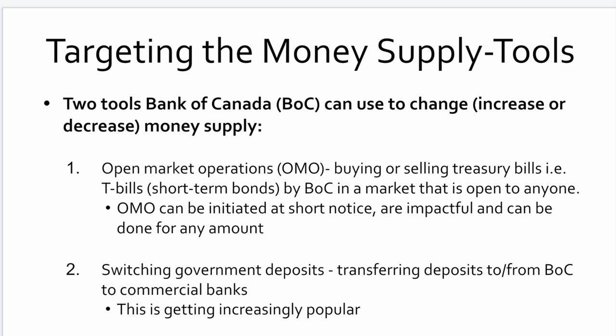Two tools the Bank of Canada can use to increase or decrease the money supply are open market operations — going out and buying and selling treasury bills (short-term bonds) in the market, open to anyone. Open market operations can be initiated on short notice, are impactful, and can be done for any amount, effectively sucking up money or putting money into the system. The other tool is switching government deposits — transferring deposits to and from the Bank of Canada to commercial banks. If the Bank of Canada lends money to the banks, the banks can then lend it out to the public.